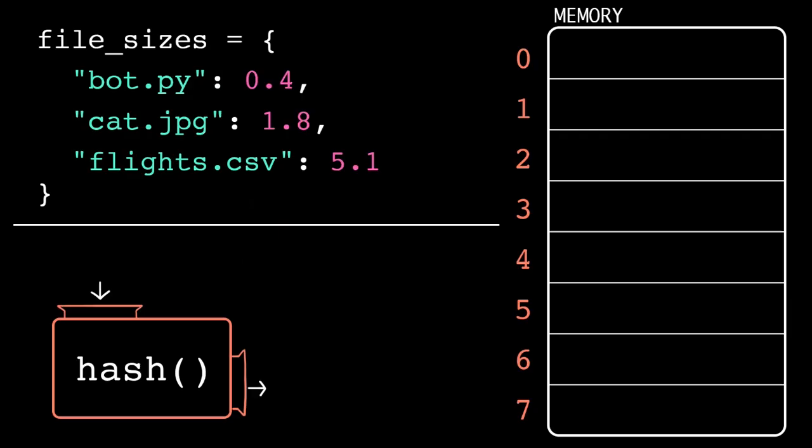For each item, it takes the key and passes it into the hash function. So, for the key bot.py, we would get the hash 6. So, the computer finds the slot at index 6, and then it stores both the key and the value here. And technically, it also stores the hash.